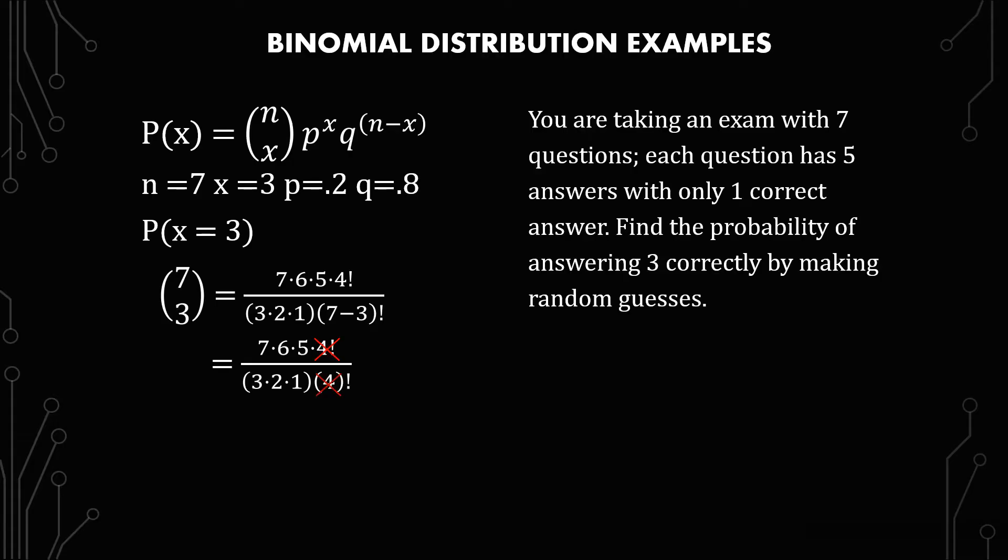And then we know three times two times one is six. So we can write those off as one. And so at the end, what we have is seven times five, which is 35.